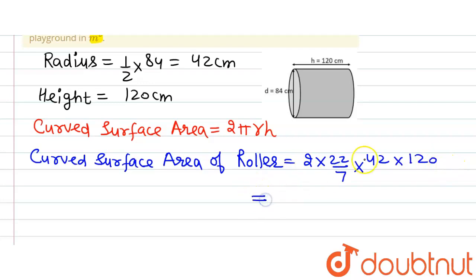Solving it further, 42 divided by 7 is 6, so we will have 2 multiplied by 22, which is 44, multiplied by 120 multiplied by 6 equals 720. On simplifying further, we get the curved surface area of the roller to be 31,680 cm square.